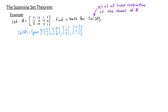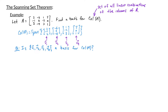Let's give these vectors a name. Let's call (3, negative 1, 2) V1, (negative 6, 2, negative 4) we'll call V2, (1, negative 2, 3) we'll call V3, and (5, 0, 1) we'll call V4. So the question is, is the set V1, V2, V3, V4 a basis for the column space of A?